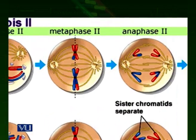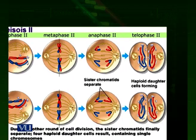Then comes anaphase II. In anaphase II, the chromosomes start separating from each other because the spindle fibers start pulling them towards the poles. Because each sister chromatid was separately attached to a spindle fiber by its own kinetochore, each sister chromatid moves towards the poles. The result is an equal number of chromosomes distributed towards each pole.